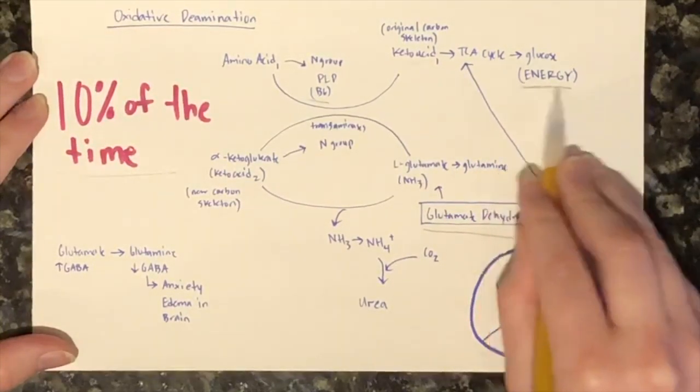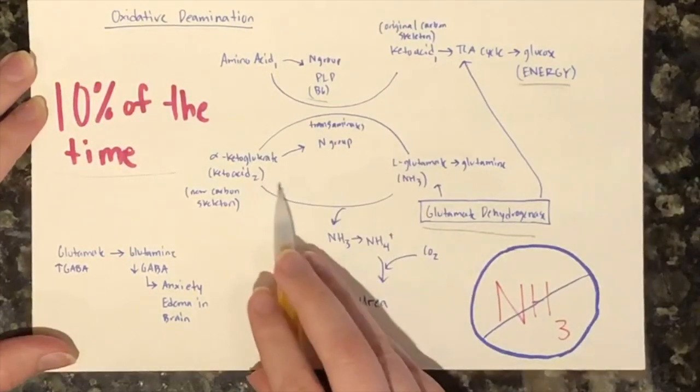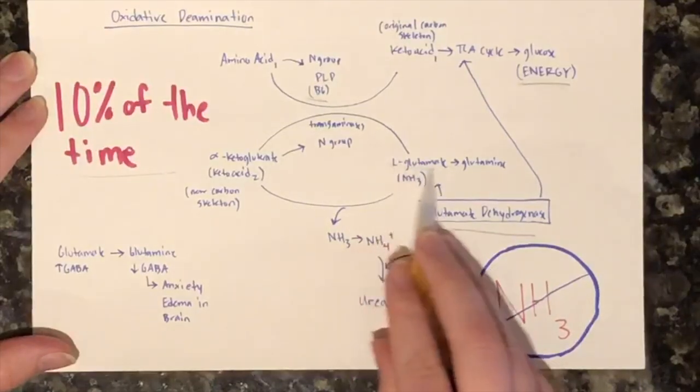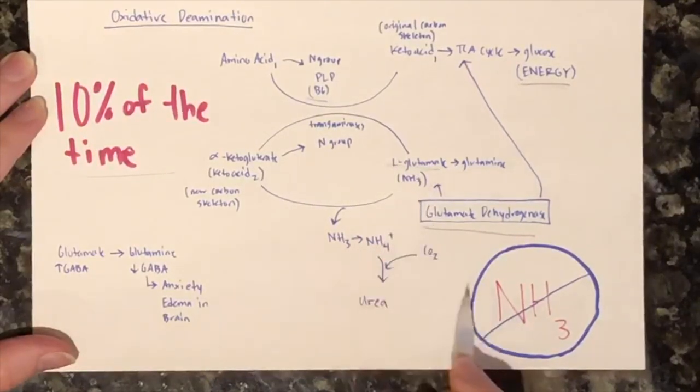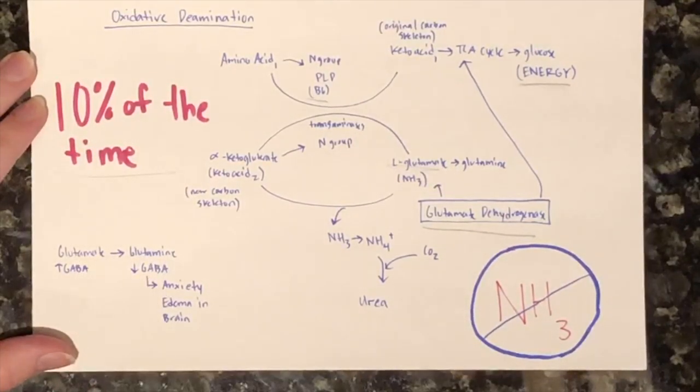We also make a new amino acid called glutamate from the alpha-ketoglutarate carbon backbone. Glutamate can hold one nitrogen group. When we have an excess of nitrogen, synthesis from glutamate to glutamine occurs. This is because glutamine can carry two nitrogen groups.